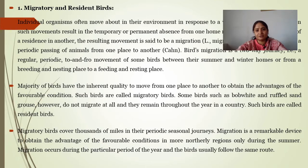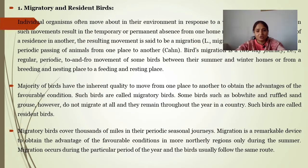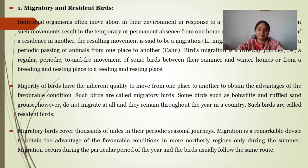Migratory birds cover thousands of miles in their periodic season. Migration is a remarkable device to obtain the advantages of favorable conditions in more northerly regions during summers. Migration occurs during a particular period of the year and birds usually follow the same route — in a particular period, because the initial stimuli are found in a particular period, and they follow a particular path.